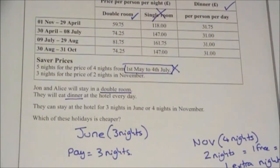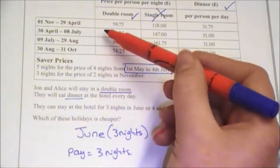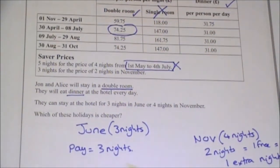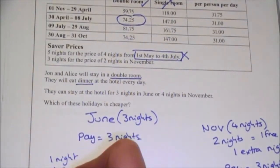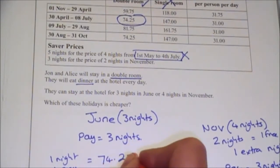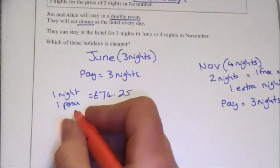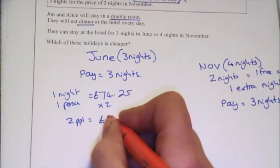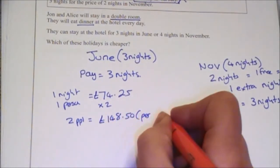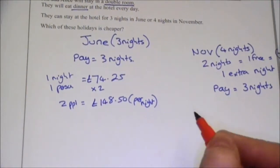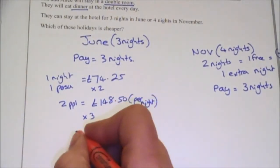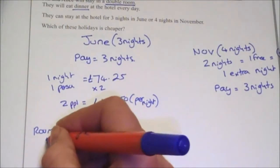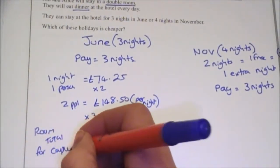Now for the actual cost. In June, the double room rate is £74.25 per person per night. There are two people, so two people costs £148.50 per night. I'm paying for three nights, so the total room cost is £148.50 times 3, which gives £445.50. That's the room total for the couple.